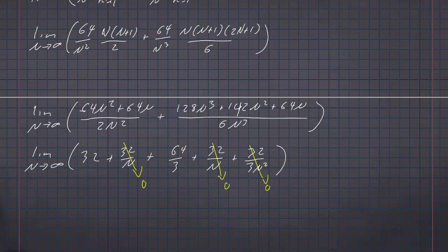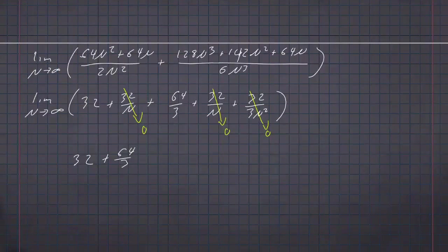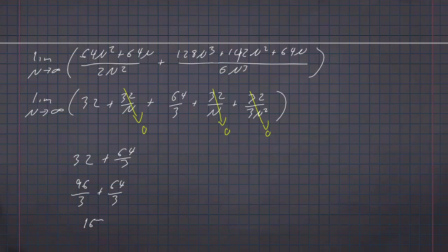Let's do some fraction work: 32 is 96 over 3, and 96 plus 64 is 160. So the integral from negative 2 to 2 of 4 minus x squared dx is 160 over 3.